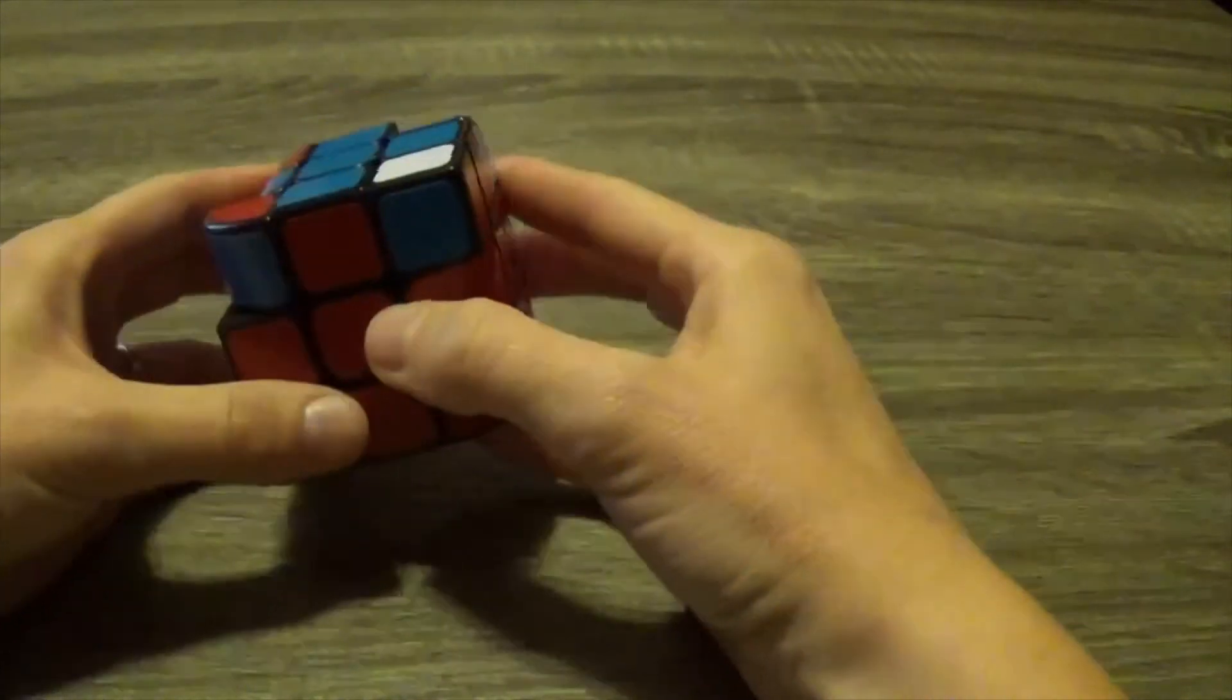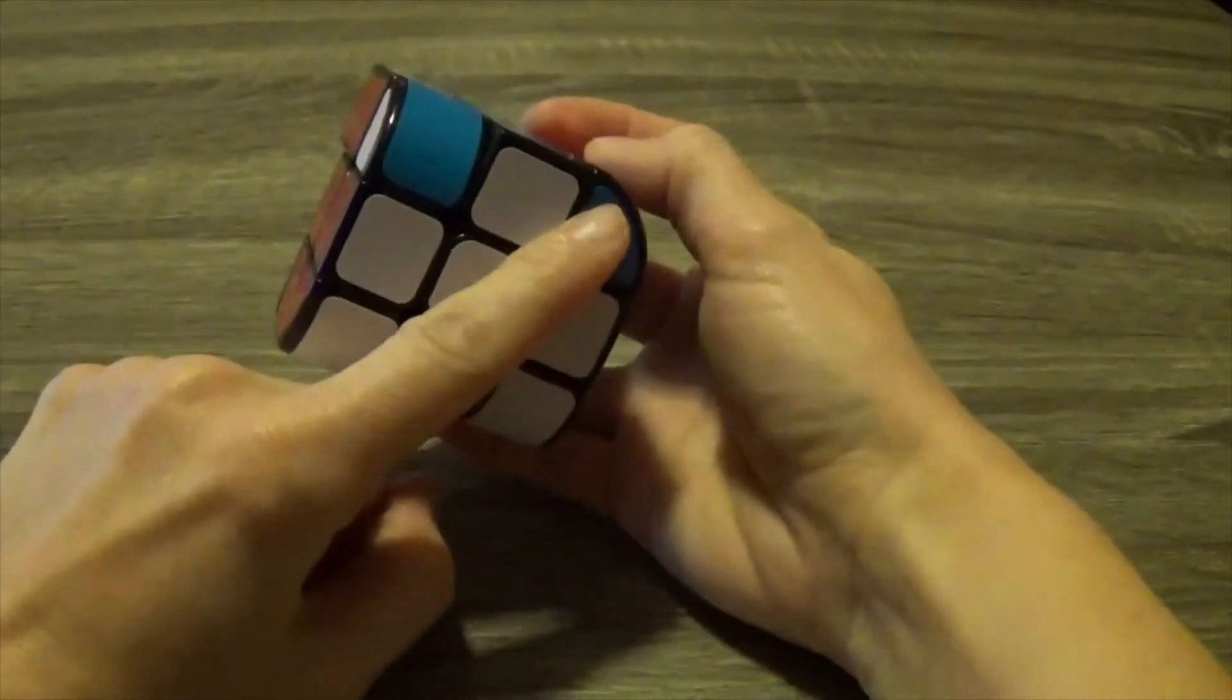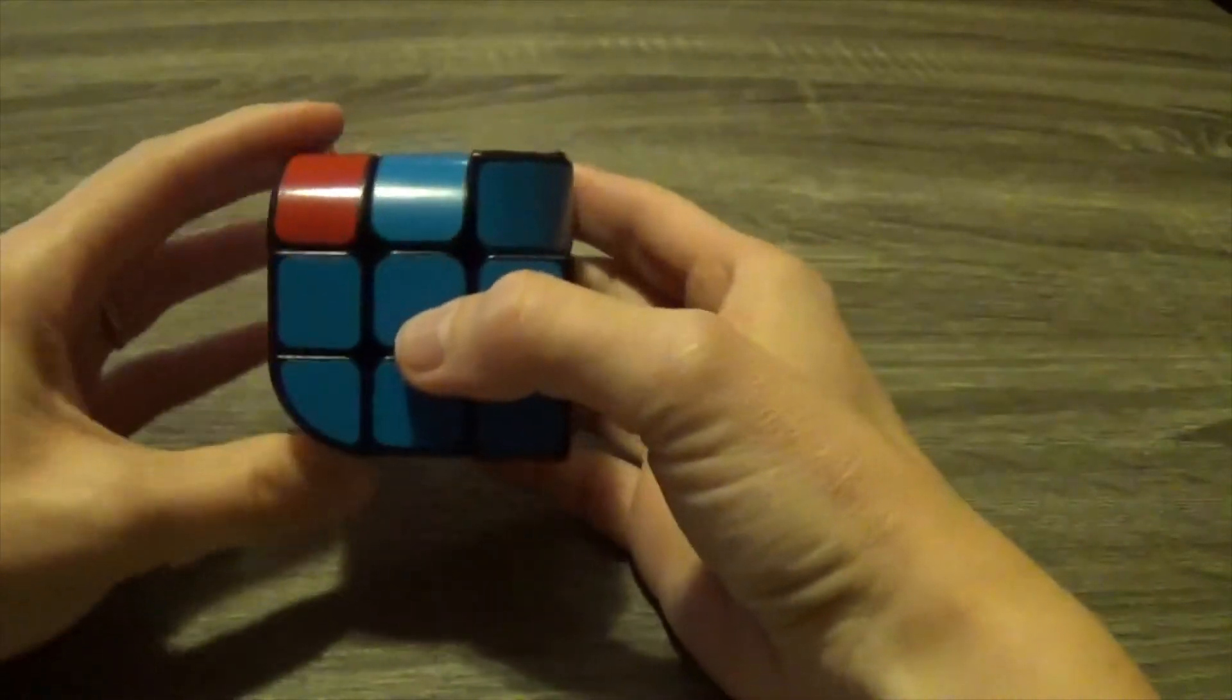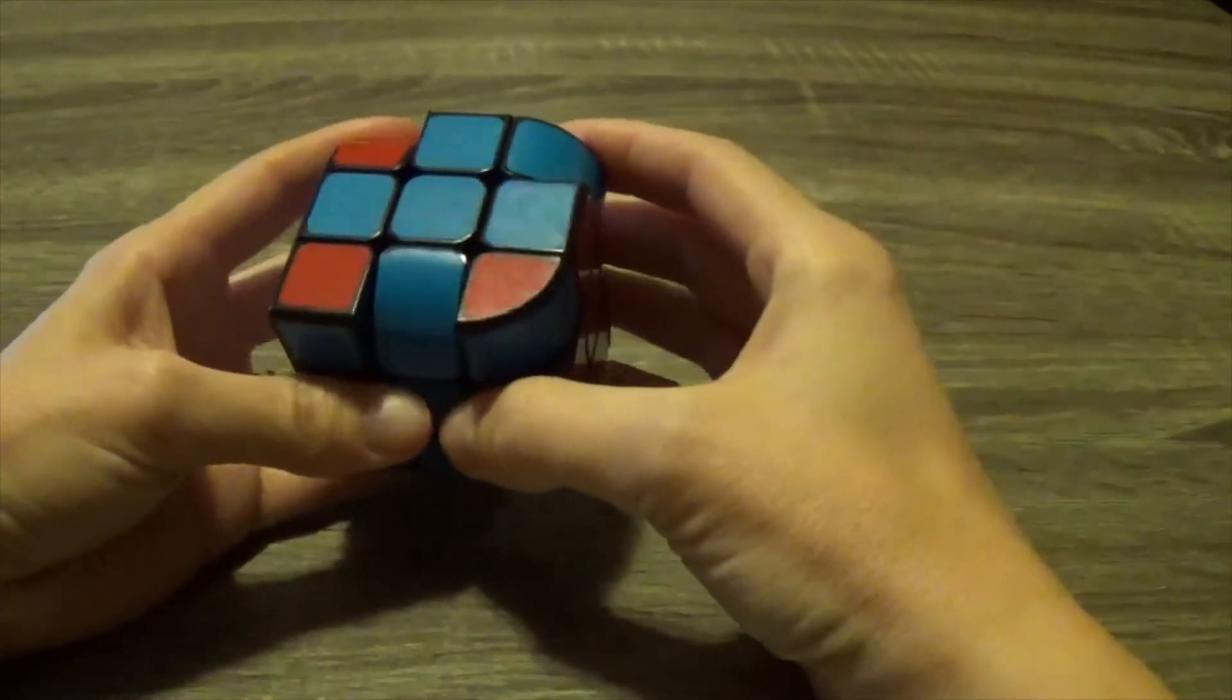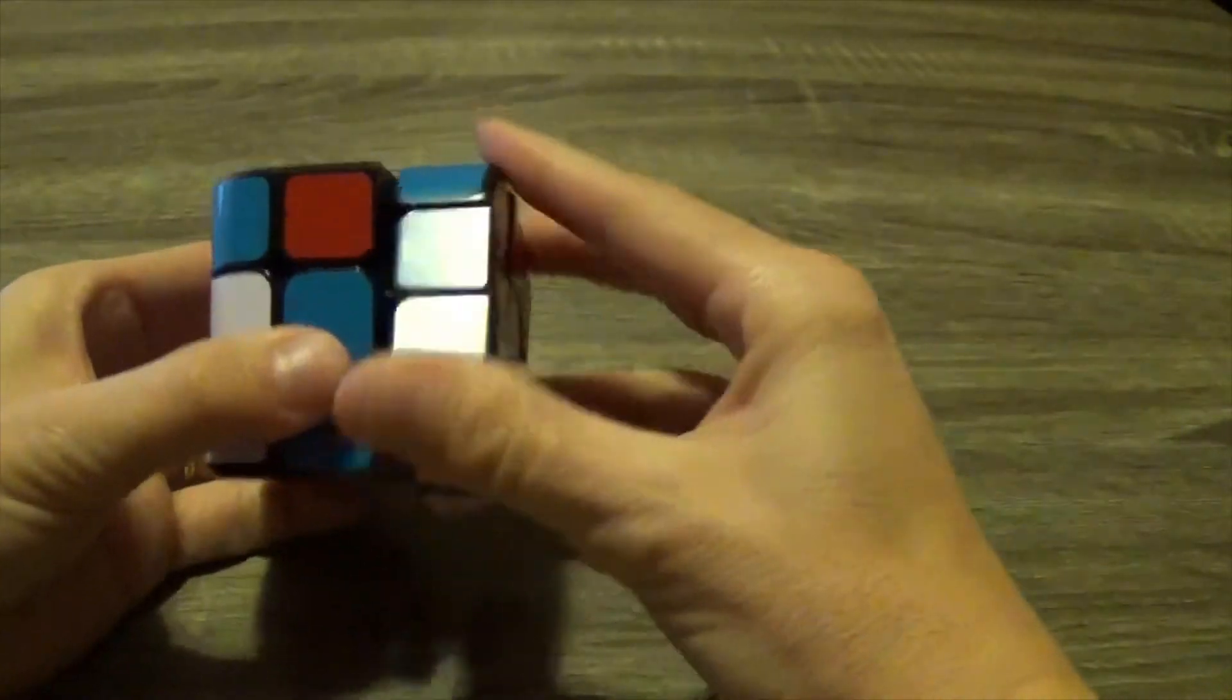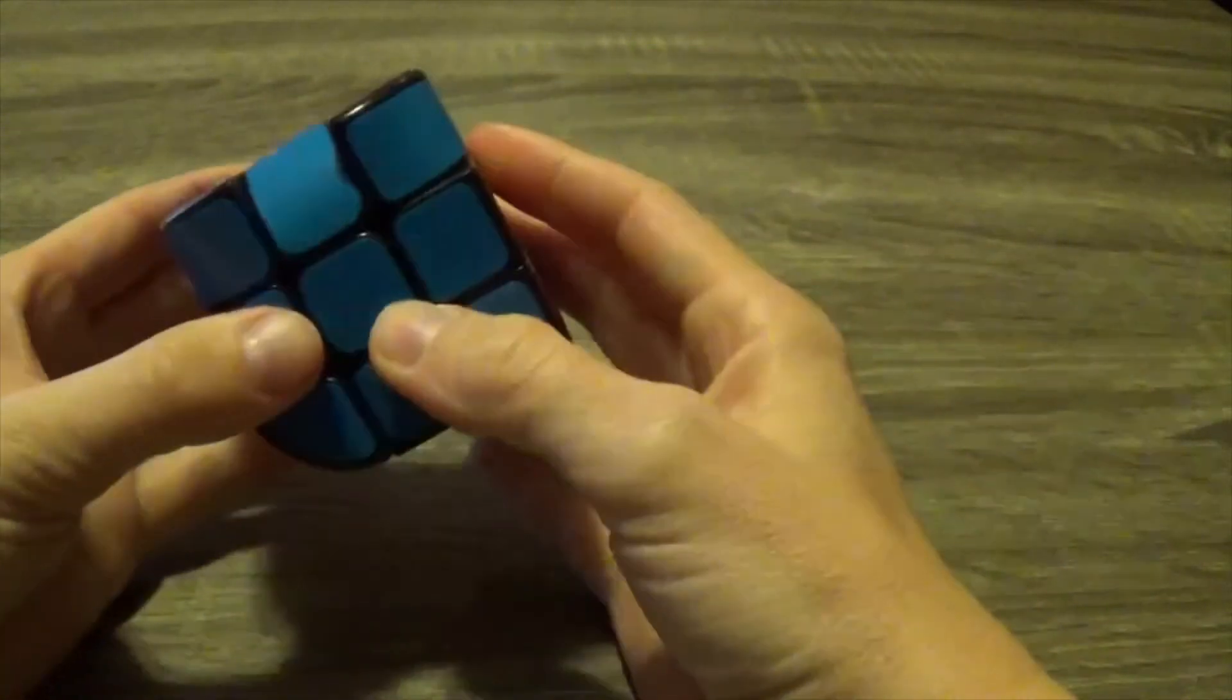Okay, and then I check my corners again. So this is a match, this is a match, and this is not a match. So I put the corner that is correct in the front right hand corner, and then I do my regular move to switch my corners around. So this is a match, this is not a match, and not a match. So now this is a match and these are matches.